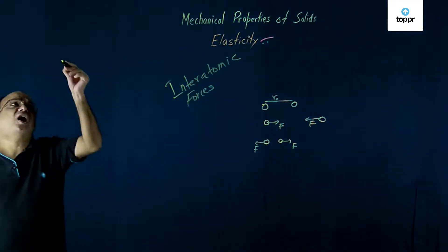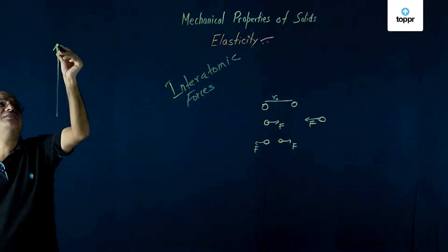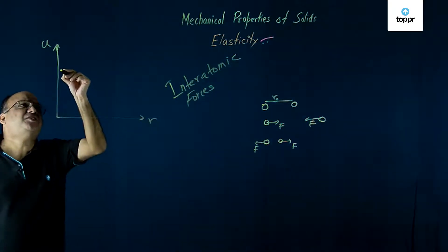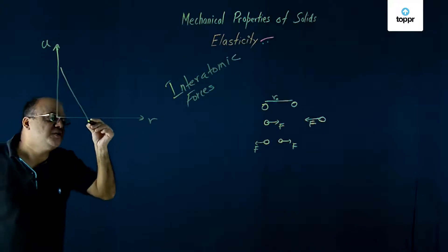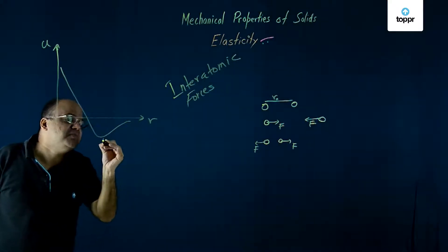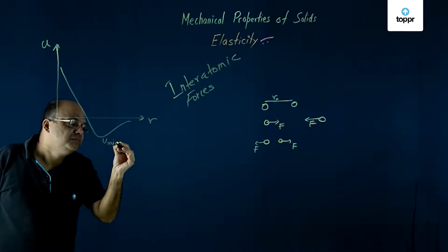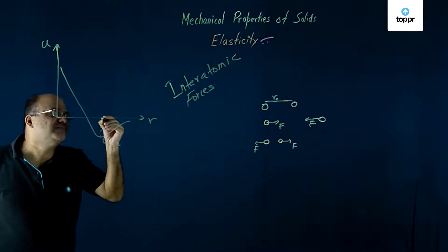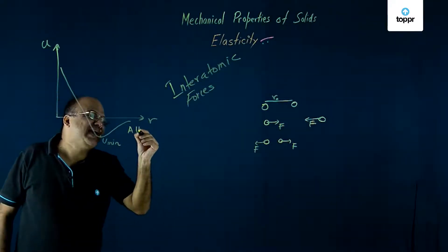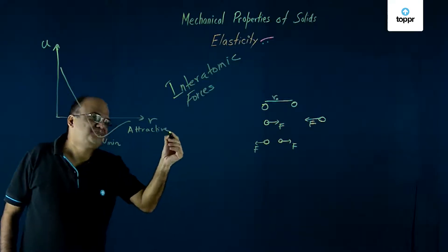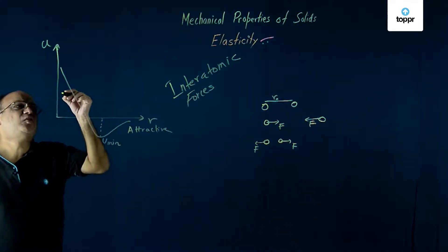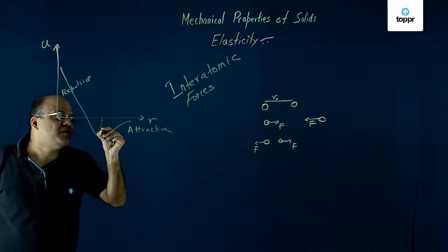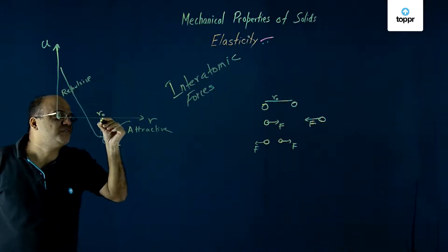If you make a graph of potential energy versus R, at that separation R0 potential energy is minimum. When the atoms are far apart the interatomic force is attractive. When the atoms are closer the interatomic force is repulsive. The atoms always want to remain in this R0 separation.